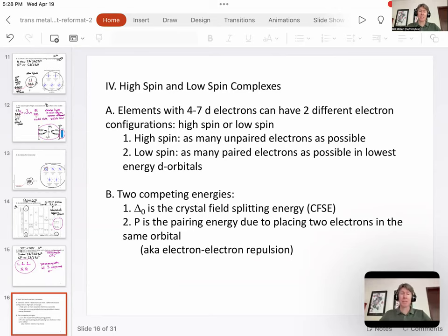Elements with 4 to 7 d electrons can have two different electron configurations called high spin or low spin. High spin has as many unpaired electrons as possible, while low spin has as many paired electrons as possible in lowest energy d orbitals.